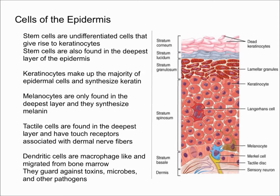Melanocytes are only found in the deepest layer and they synthesize melanin, which is a pigment that shields your DNA from UV radiation. As melanin is being made, the keratinocytes phagocytize — essentially break up — the melanin fragments and move the melanin onto the sun-facing side of the nucleus to protect it, blocking UV radiation from penetrating the nucleus and the genetic information.